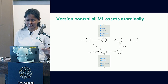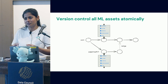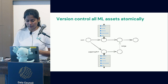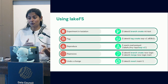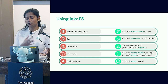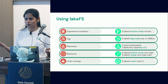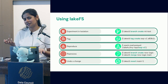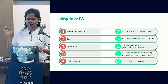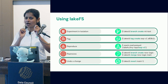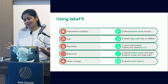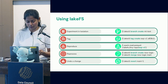LakeFS is infrastructure you can build on top of based on your requirements for an ML experimentation platform. Different use cases include experimenting in isolation by creating a branch, and creating tags specifically for reproducibility—similar to release tags in Git for different versions. These tags help you go back to a specific iteration: just check out that tag and you have everything ready. You can reproduce by referring to a specific tag, and undo changes by merging and reverting as well.